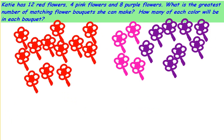Let's do the same thing again. Katie has 12 red flowers, four pink flowers, and eight purple flowers. What is the greatest number of matching flower bouquets she can make? How many of each color will be in each bouquet? Our numbers are 12 red, four pink, and eight purple flowers.